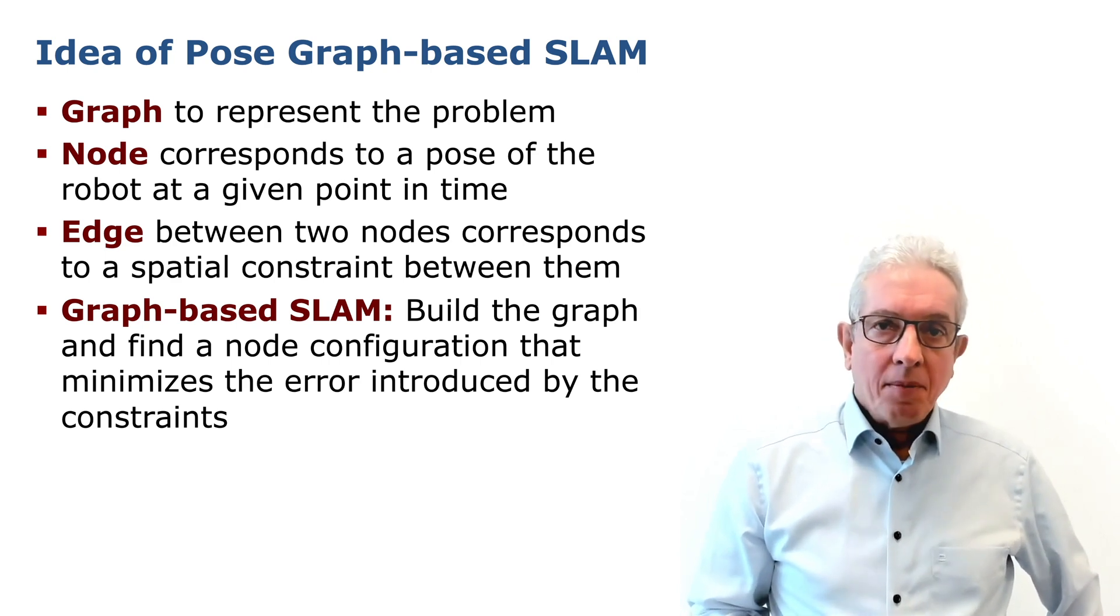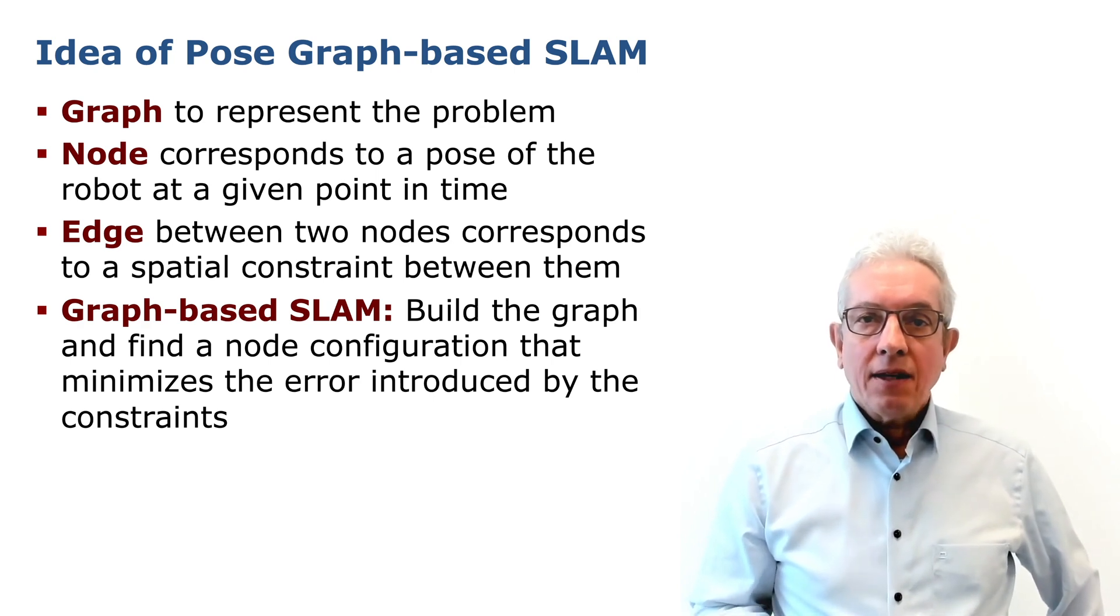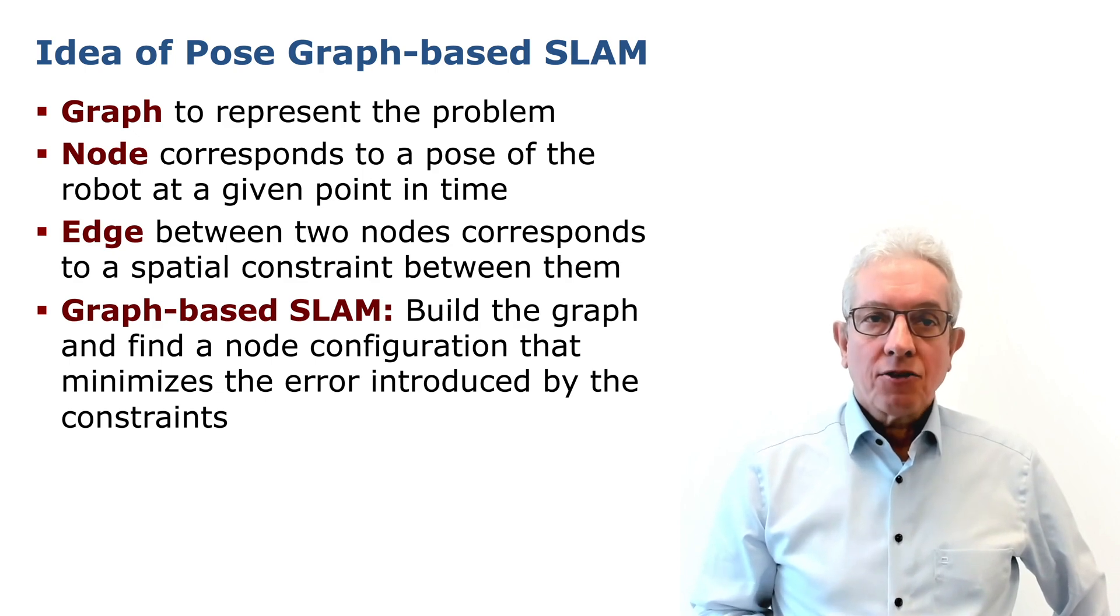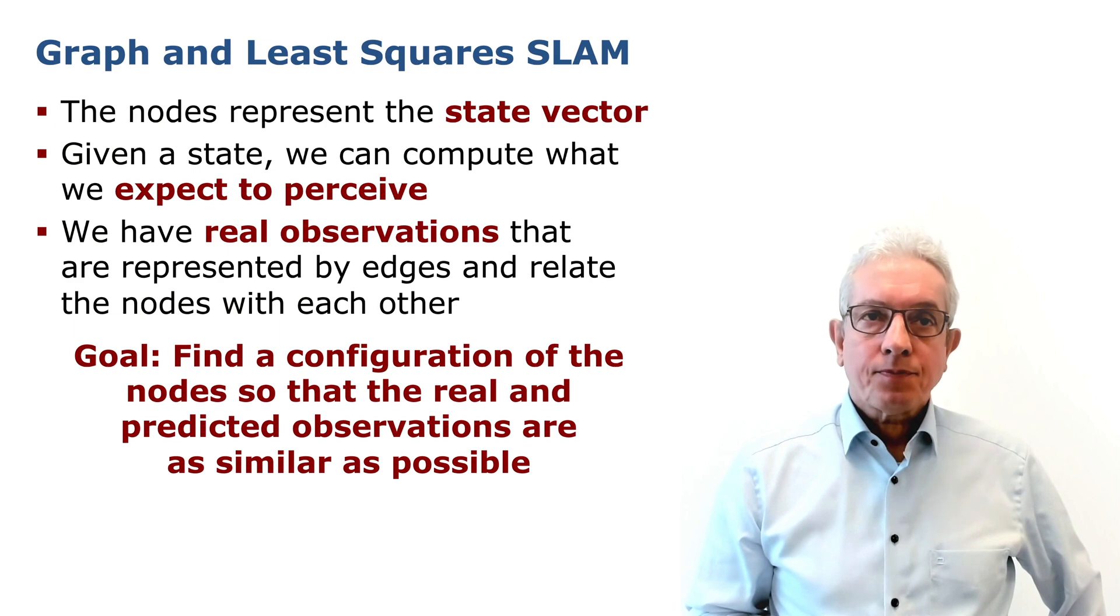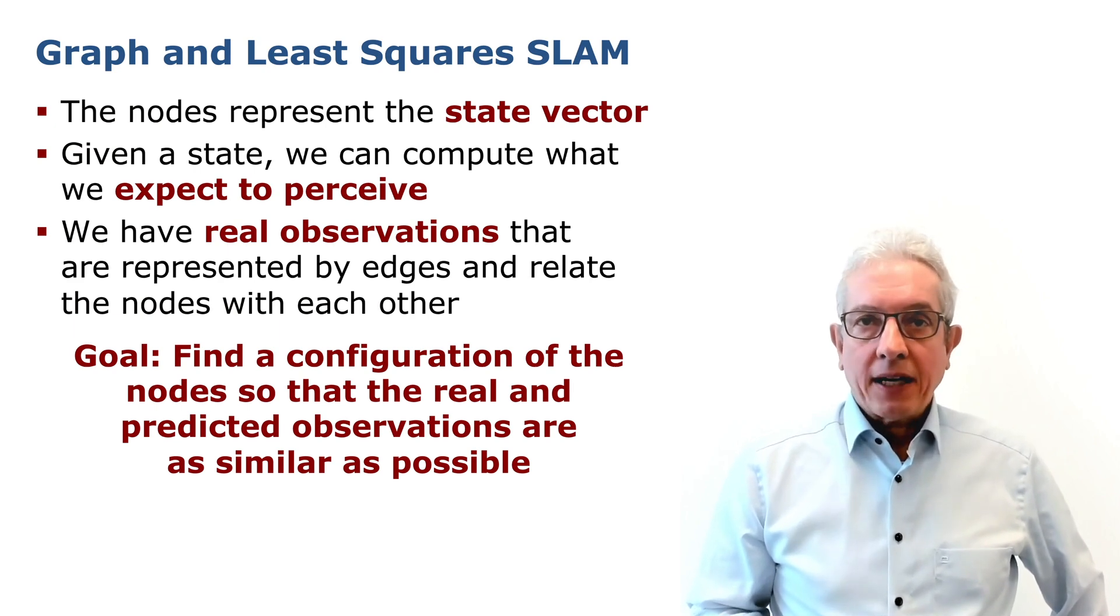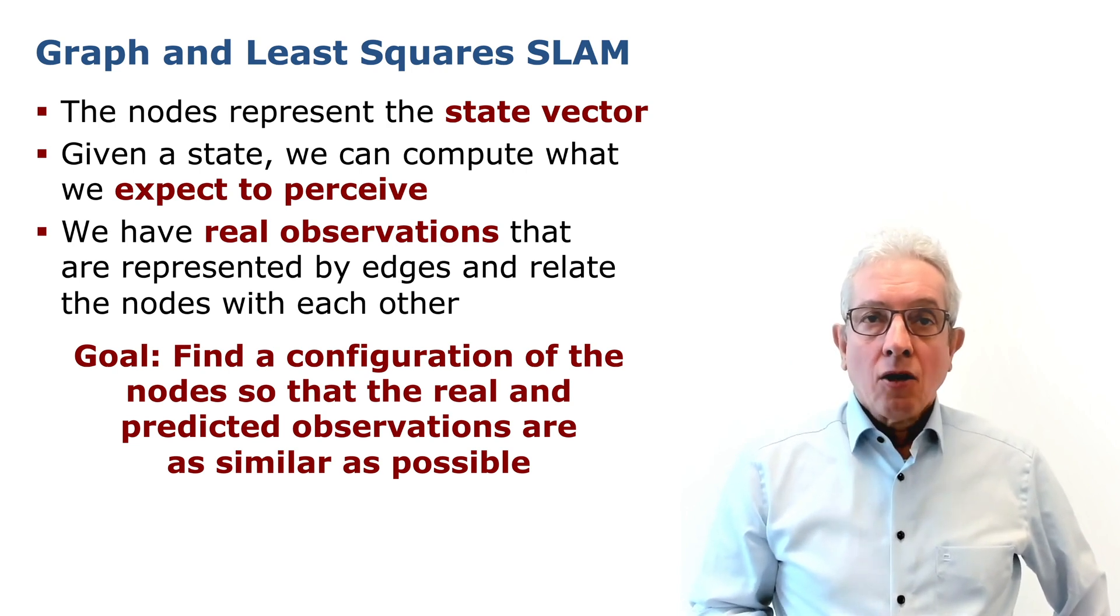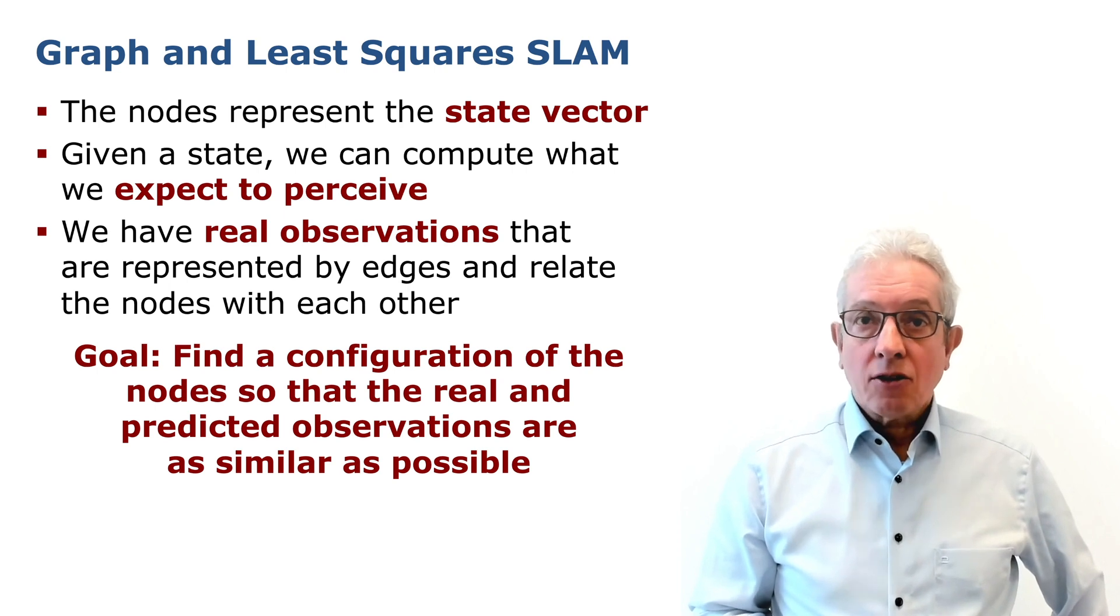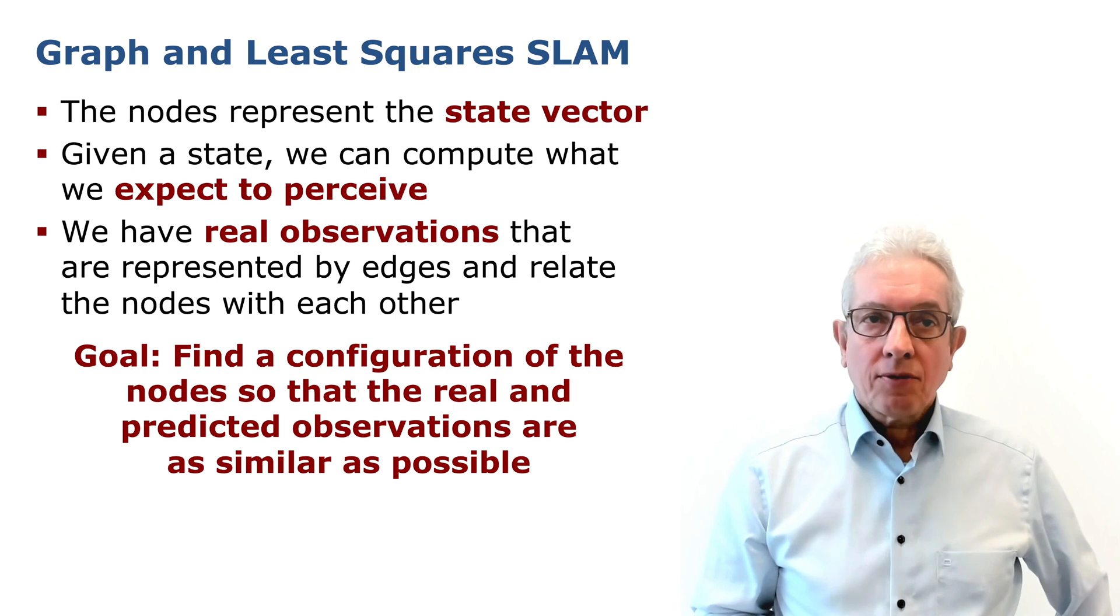Graph-based SLAM basically means building a graph and finding a node configuration that minimizes the error introduced by the constraints. And how is the error formulated? So let's first talk about the state vector, which is basically the collection of all nodes in the graph. Once we have these nodes and the corresponding poses, we can calculate what we expect to perceive.